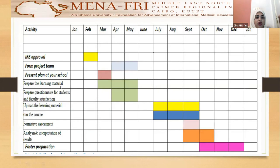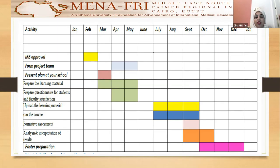About the GAN chart: first of all, we acquired the IARP approval in February. We formed the project team and presented the plan at our school in March. We prepared the learning material from March to May, and we also prepared questionnaires for students and for the faculty regarding their satisfaction about the online course. Uploading the learning material and running the course was from July to September.